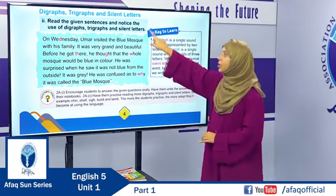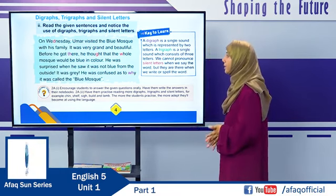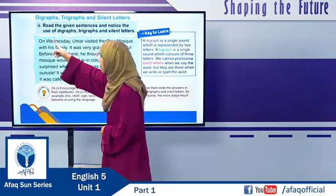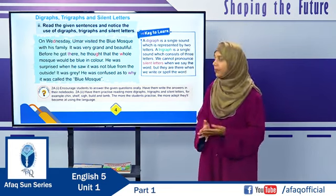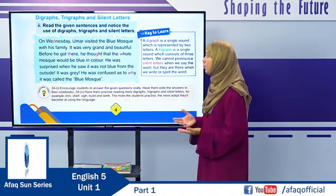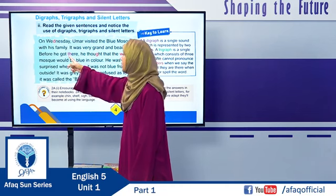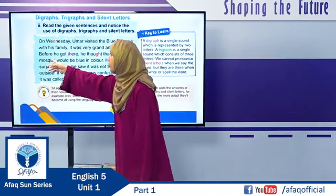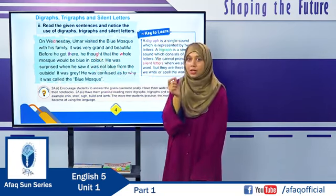Now let's turn to exercise number 2: read the given sentences and notice the use of digraphs, trigraphs, and silent letters. Let's read: On Wednesday — D is silent here, we say 'Wednesday' — Umar visited the Blue Mosque with his family. Before he got there — 'there' has the digraph TH, two letters with one sound — he thought. Notice there is no G sound in 'thought.' He thought the whole mosque would be blue in color.